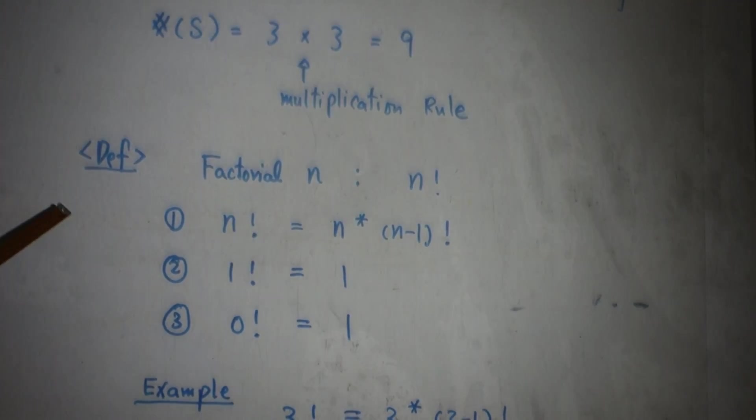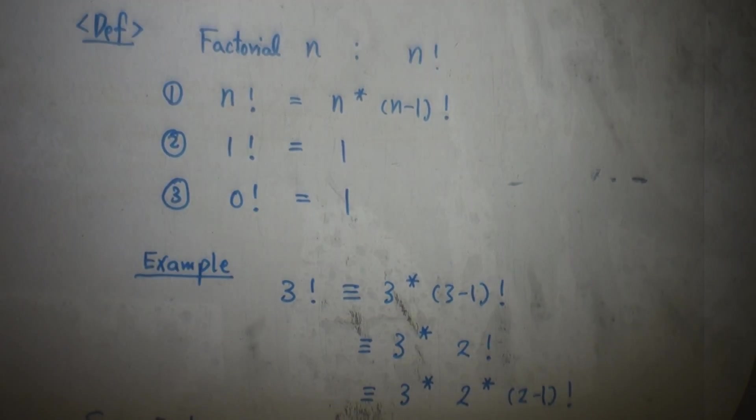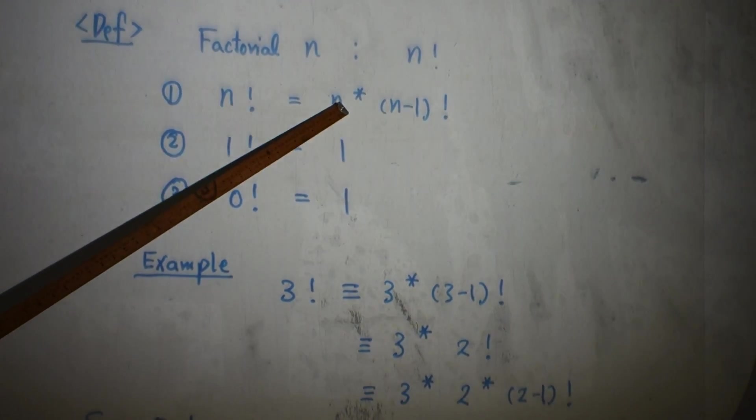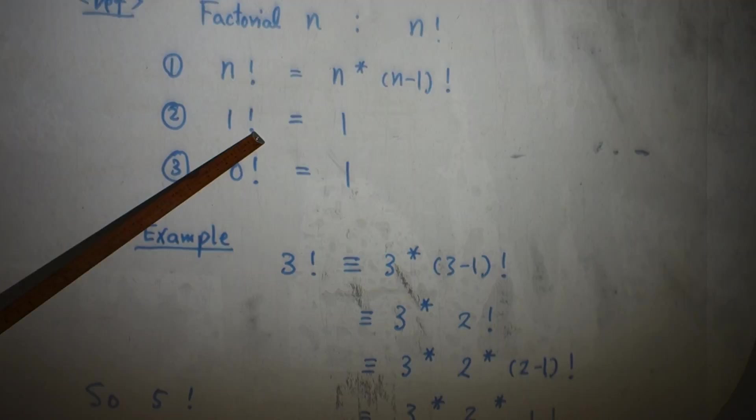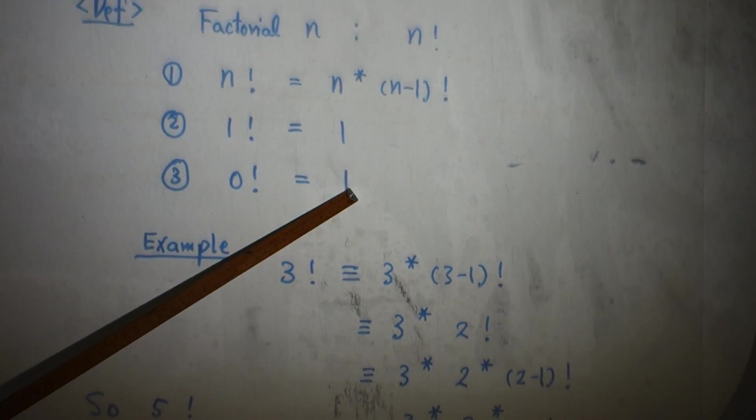Next one introduces you to factorial. Factorial n. How do we define n factorial? n! is defined as n times (n-1)!. And 1! is defined to be 1, and also we define 0! to be 1.